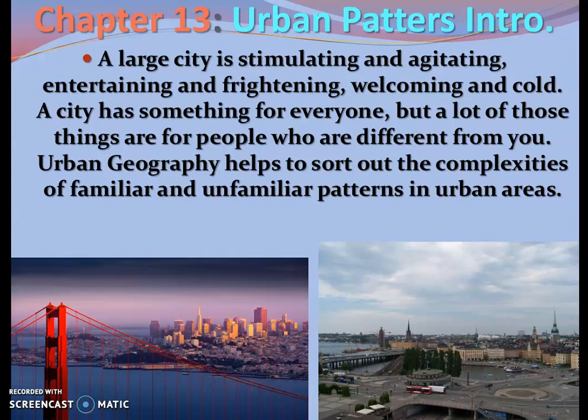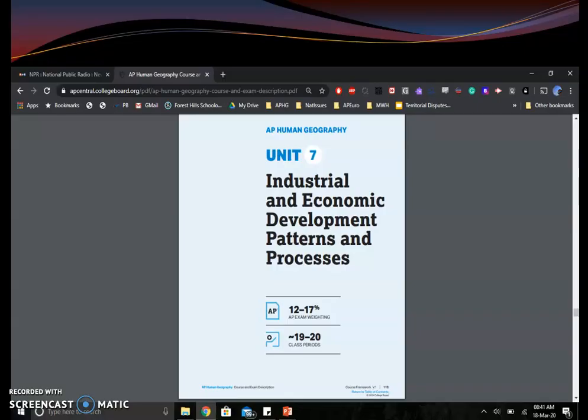Look at those two city skylines — do you know what cities those are? One of them is pretty easy on the left. Maybe that'll be an EdPuzzle question. This chapter falls under what the College Board considers Unit 7. The final section of human geography is focused on industrial and economic development patterns and processes, and it can make up between 12 to 17 percent of the content on the AP exam — a pretty heavy focus.